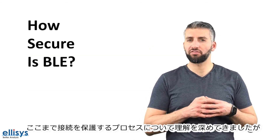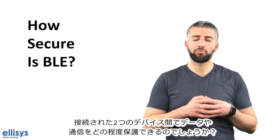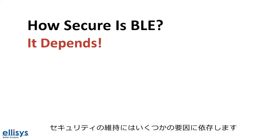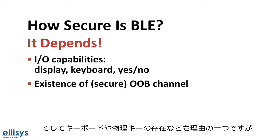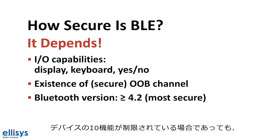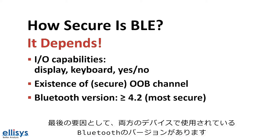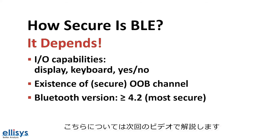Now that we have a better idea of what securing a connection looks like, one may wonder how secure BLE actually is. Unfortunately, the answer is not simple — it depends on a few factors. These include the IO capabilities of the devices, such as the existence of a display, keyboard, and physical keys for user confirmation of matching values. Another factor is the existence of an out-of-band communication channel, which can be used to exchange sensitive values when IO capabilities are limited. The last factor is the Bluetooth version used: if Bluetooth 4.2 or later is used, the process can be secured even further.